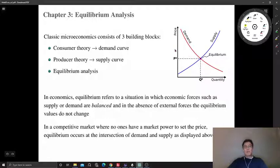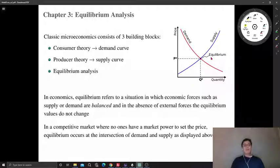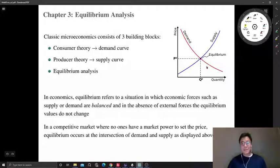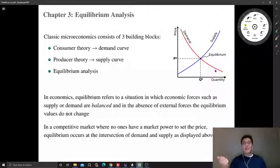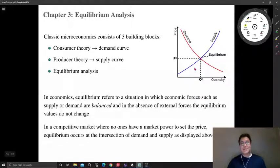If price is above p-star, there will be excess supply — firms have units produced but not sold, which incurs additional costs. So firms have an incentive to lower price and produce less. In either case, some values will change, so it's not an equilibrium. The only candidate for equilibrium is this intersection point.